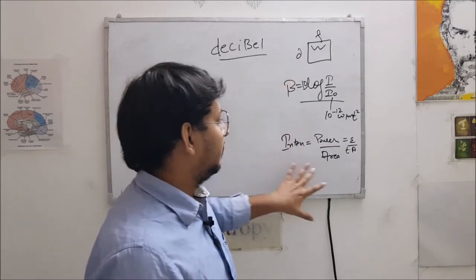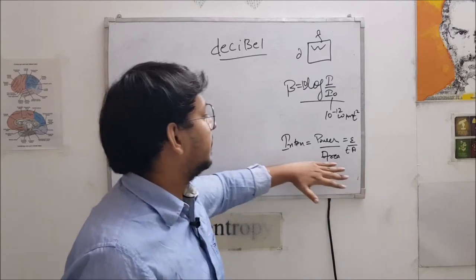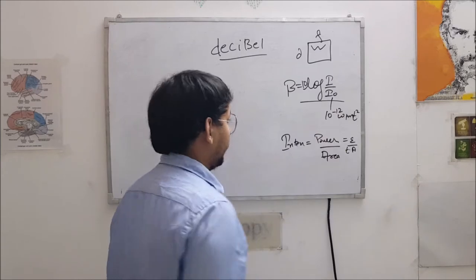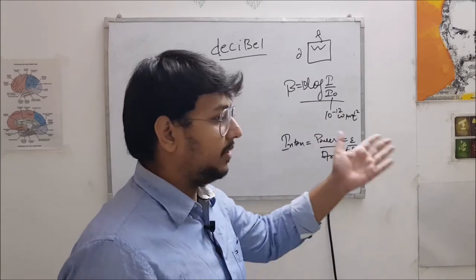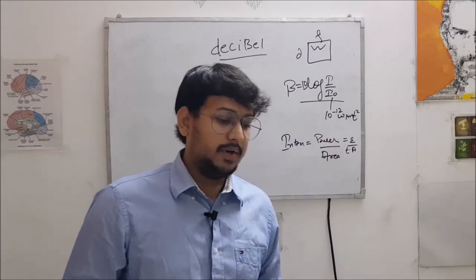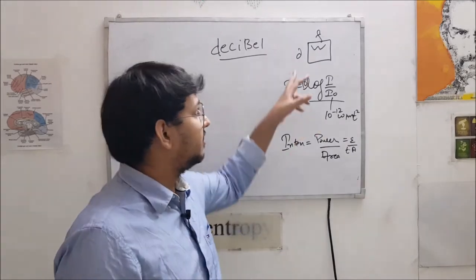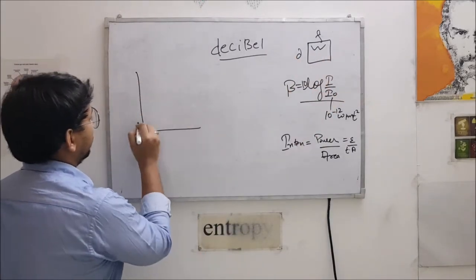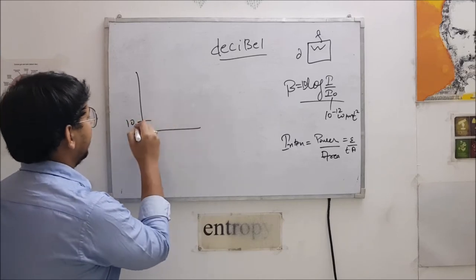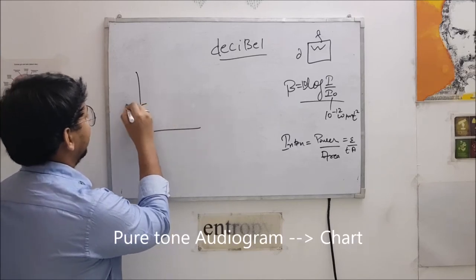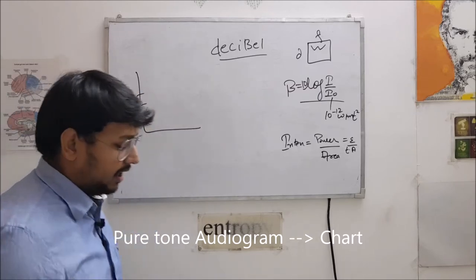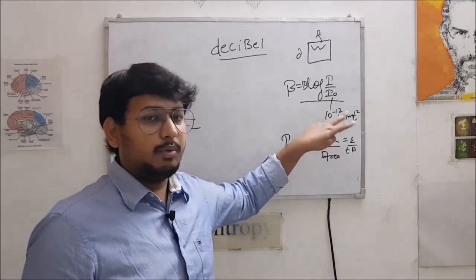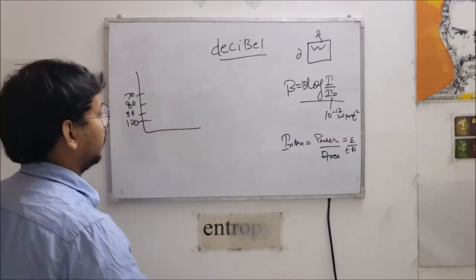Now looking at this, we can see that this intensity of sound, for example, this I0 is 10 to the power minus 12 watt per meter square. Now when we talk about the chart here, we are very easily writing 100, 90, 80, 70, likewise. Now think what if this decibel wouldn't have been there and we were writing intensity alone, intensity alone.